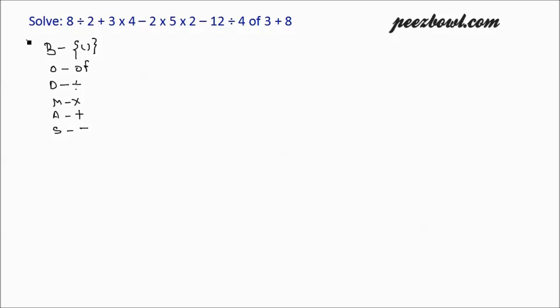In BODMAS, B has the highest priority and A and S have the least priority. I write the question again: we have 8 divided by 2 plus 3 multiplied by 4 minus 2 multiplied by 5 multiplied by 2 minus 12 divided by 4 of 3 plus 8.